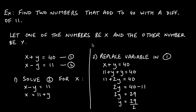Now let's do a word problem where you create your own system. Find two numbers that add to 40 with a difference of 11. Define variables: let one number be x and the other be y. Since their sum is 40: x plus y equals 40 (equation 1). Since their difference is 11: x minus y equals 11 (equation 2). We now have a system of linear equations.